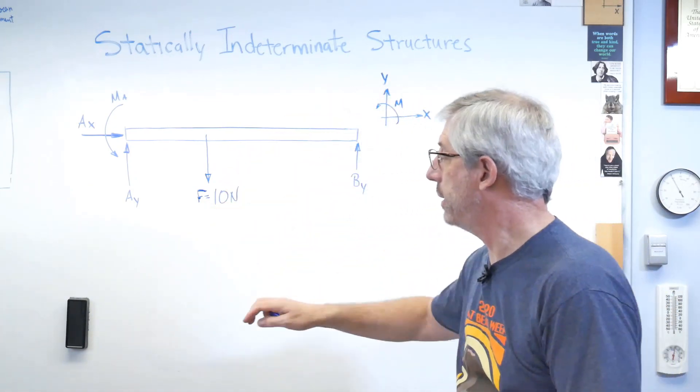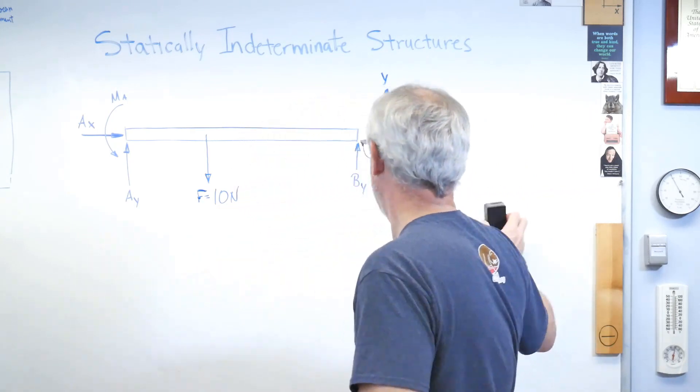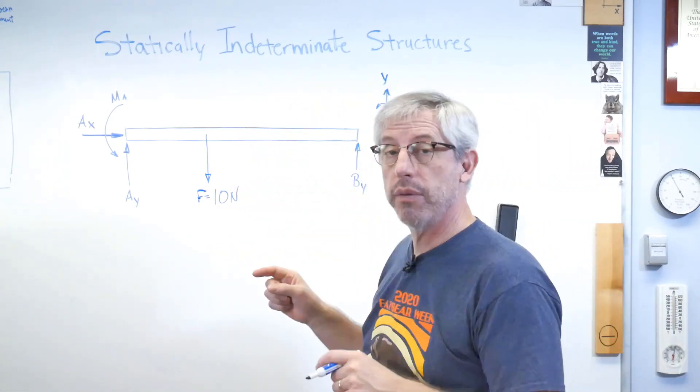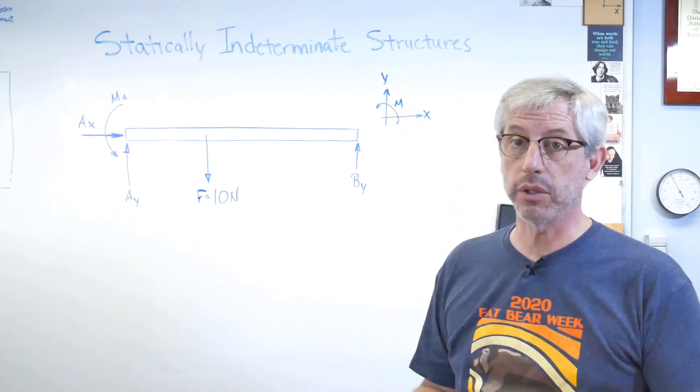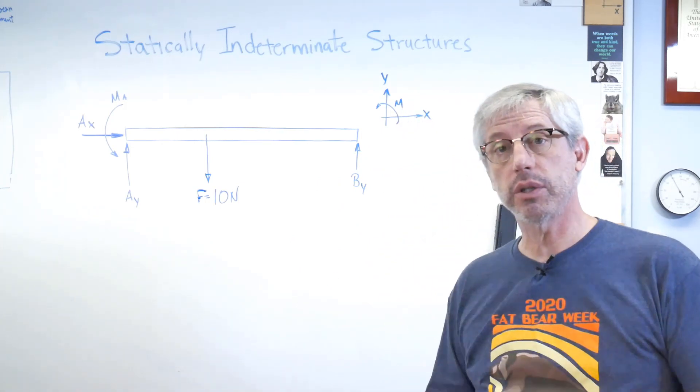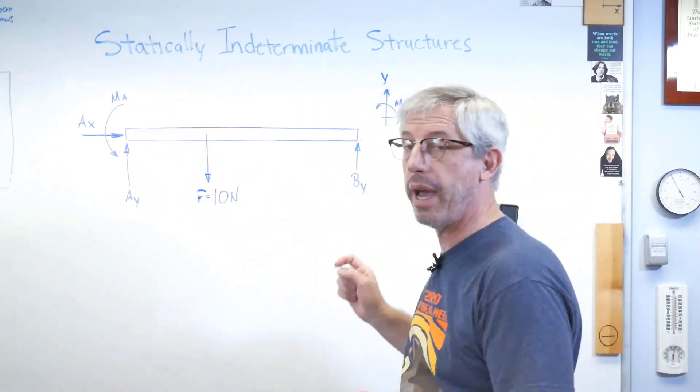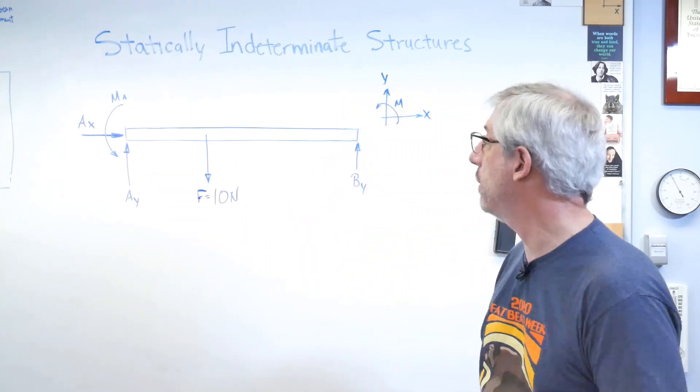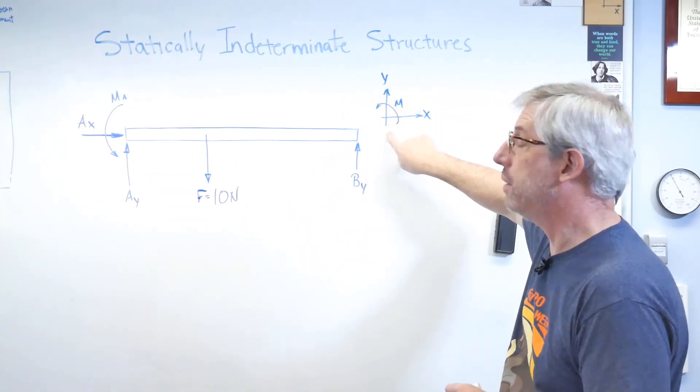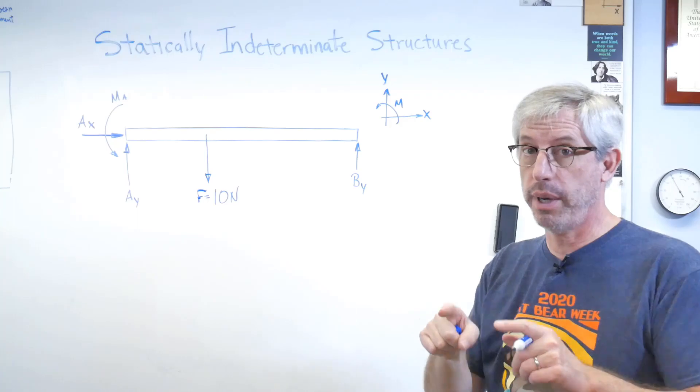Okay, that's a lot tidier now. Remember, free body diagram: I've cut the structure free from its supports, and the way the supports talk to the structure is through all these reaction forces and moments that I've added. This is how the structure knows the supports are there. I've got my positive sign convention, because remember, without a positive sign convention, it's not a free body diagram.